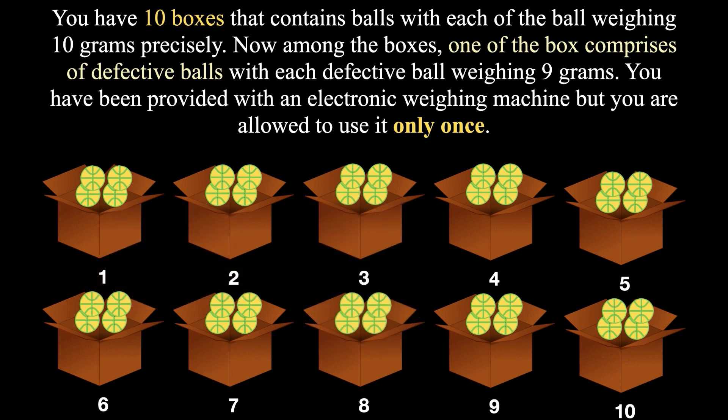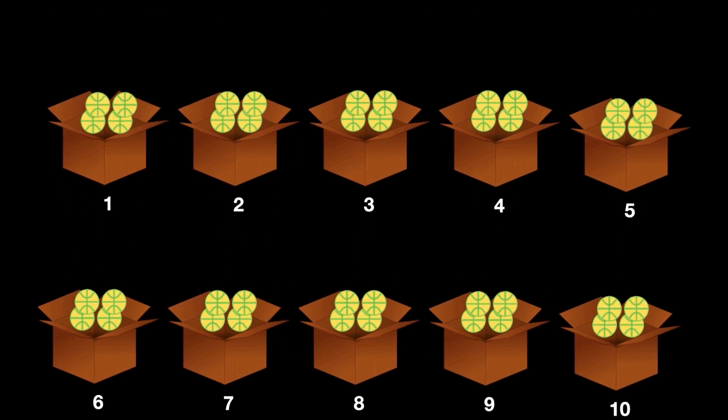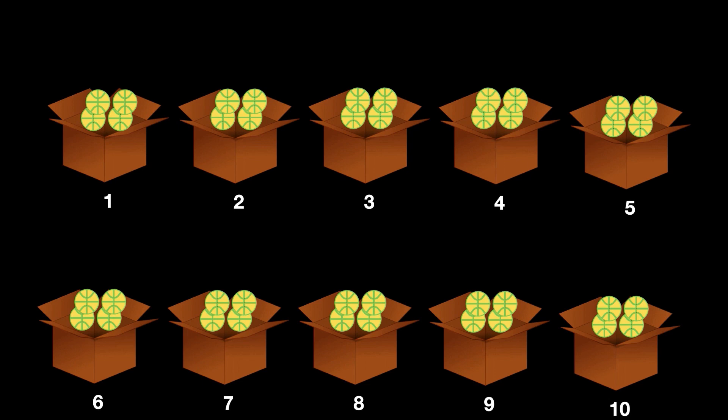For convenience, let's name the boxes from 1 to 10. To solve this problem, you have to leverage the fact that you know exactly what each good ball is supposed to weigh and what each defective ball is supposed to weigh. Many of us instinctively will take one ball out of each box and try to find a way to make it work, but the trick is to take a different number of balls from each box.